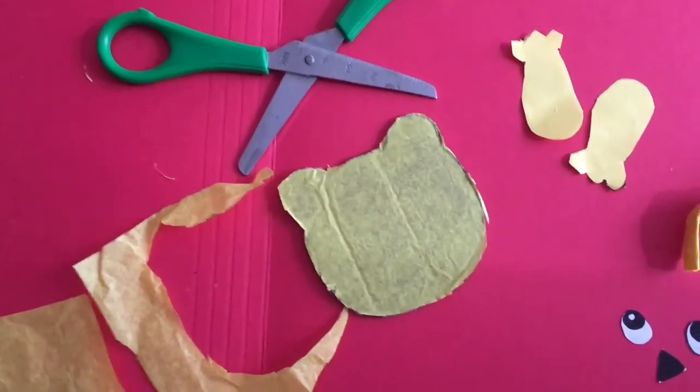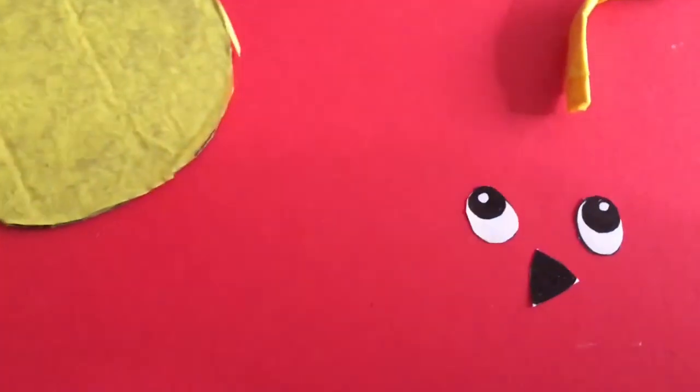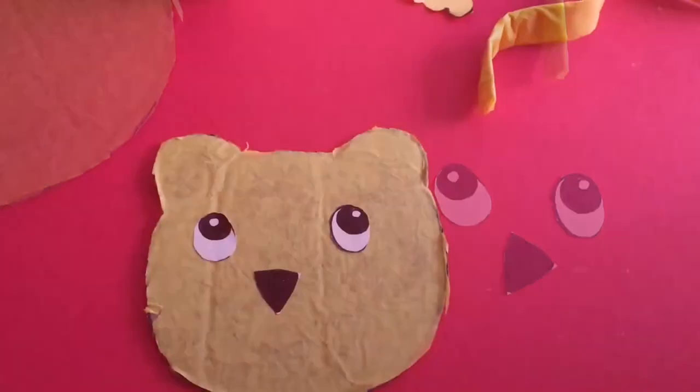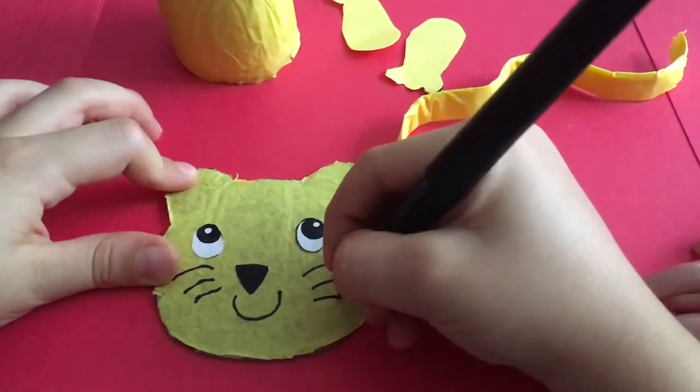Now we have two eyes. Now we are going to paste the two eyes and the nose. Draw the mouth and whiskers.